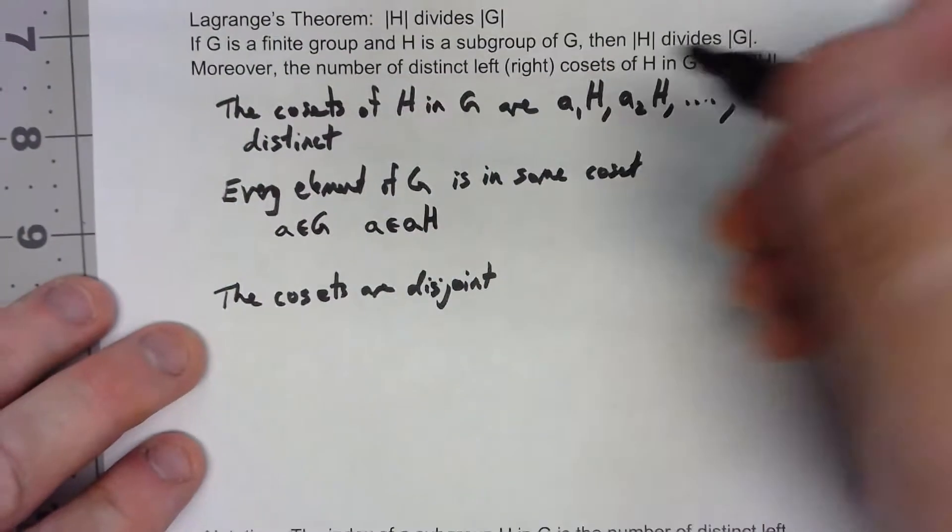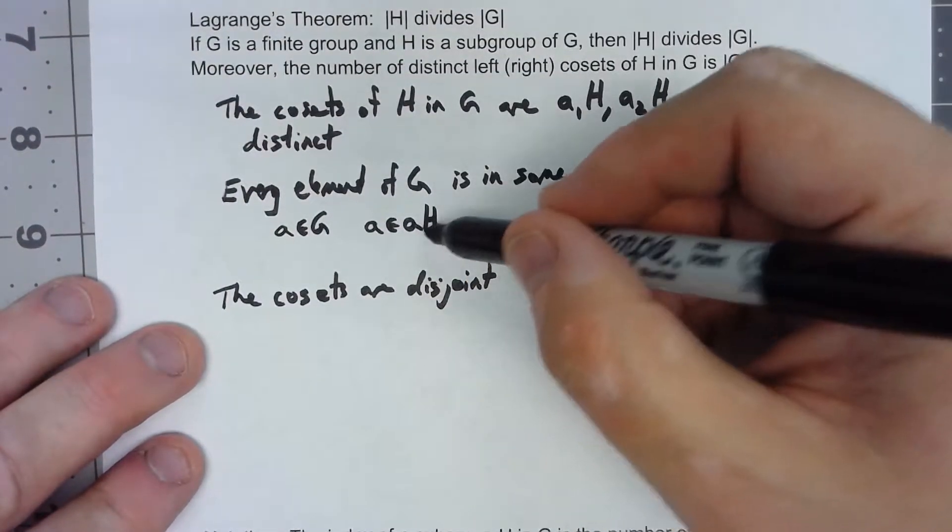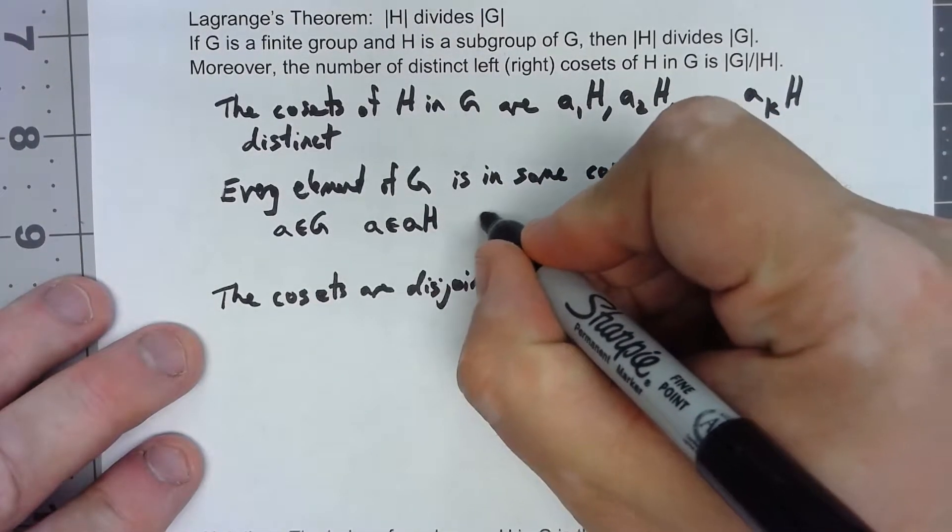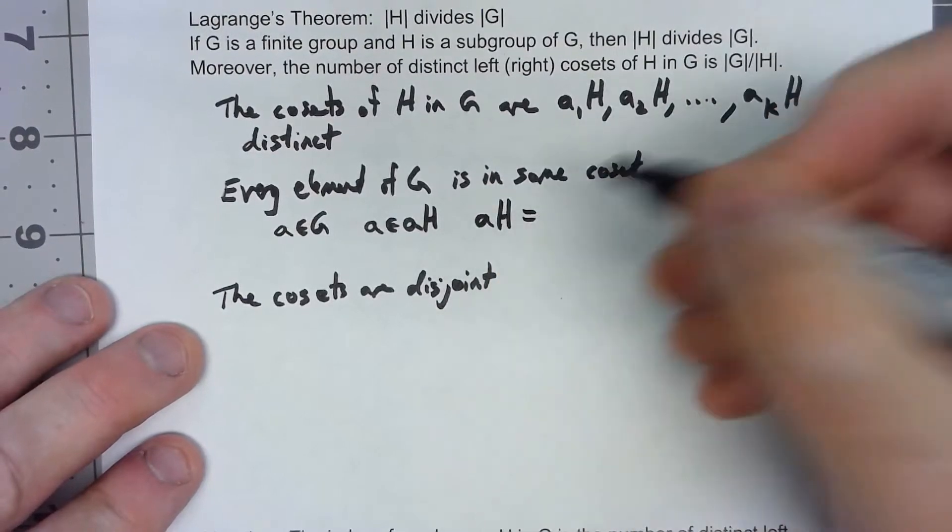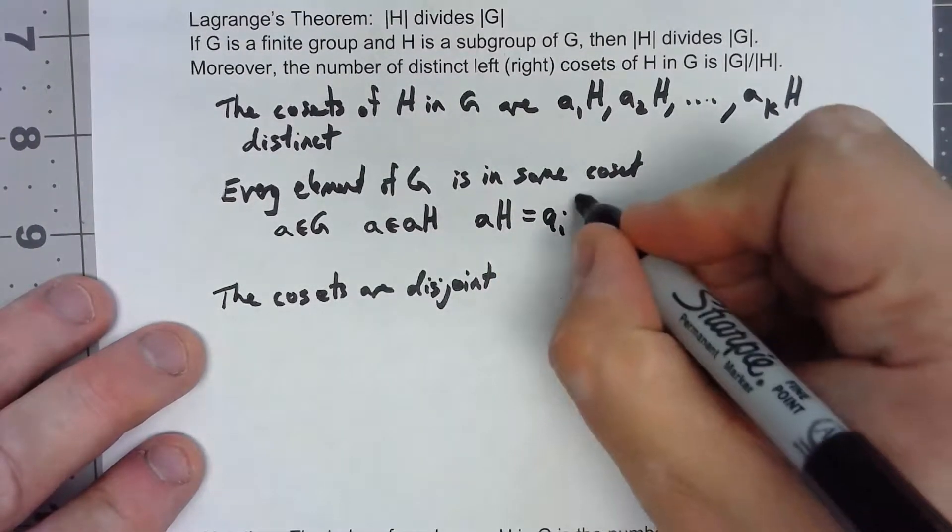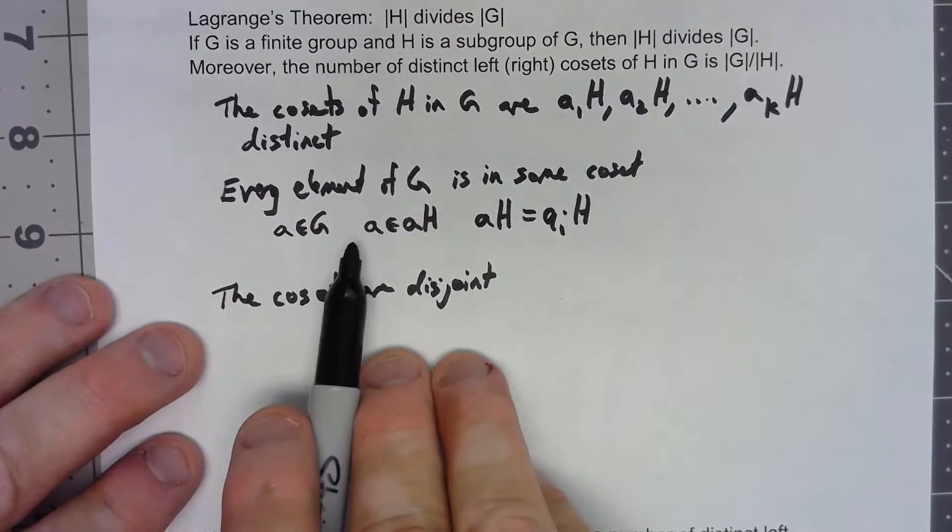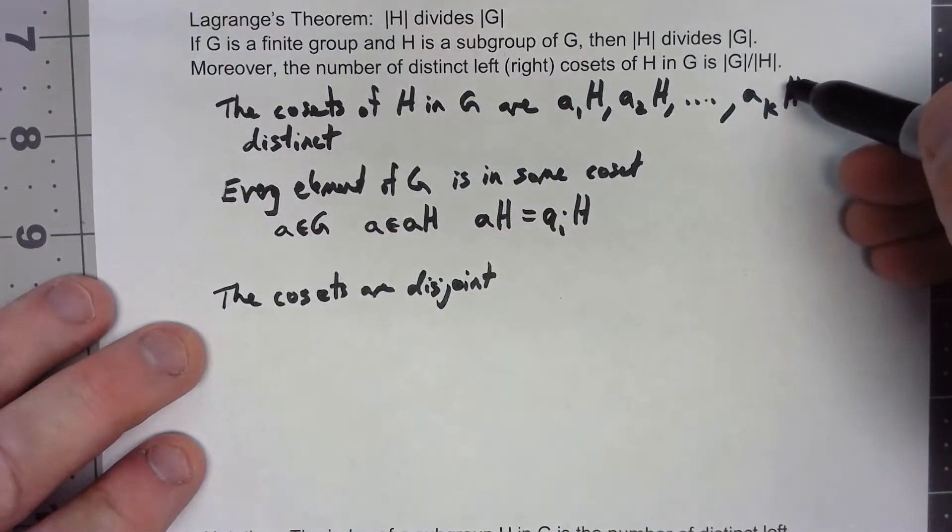But these were the distinct cosets in there, so that must be that AH is equal to some a_i H, and there we go. So A must be in one of these cosets.